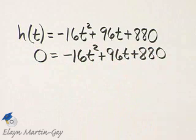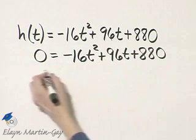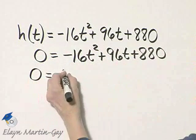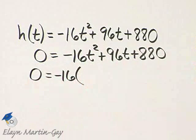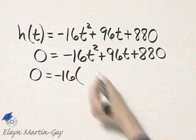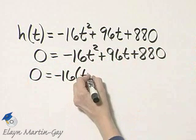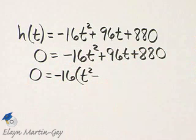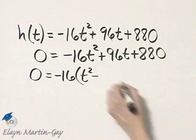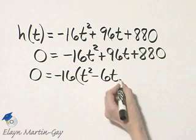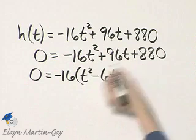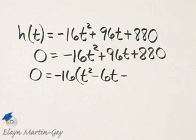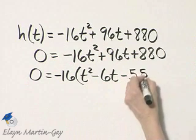How do we solve this quadratic equation for t? Notice first of all, you can factor out a common factor of negative 16. This term divided by negative 16 is t squared minus 96t divided by 16 will give me 6, then I have my t, then I'll have a minus, and 880 divided by 16 is 55.